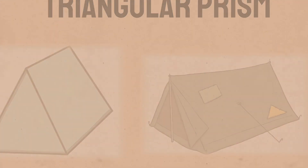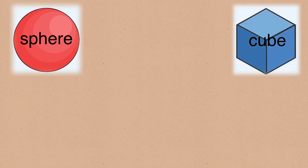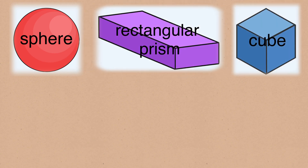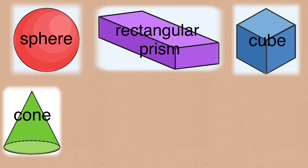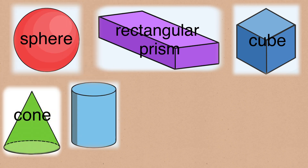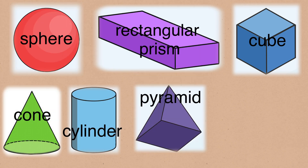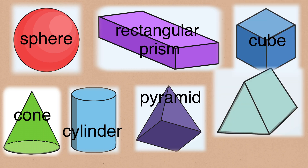Let's review the different 3D shapes: sphere, cube, rectangular prism or cuboid. We also have cone, cylinder, pyramid, and triangular prism.